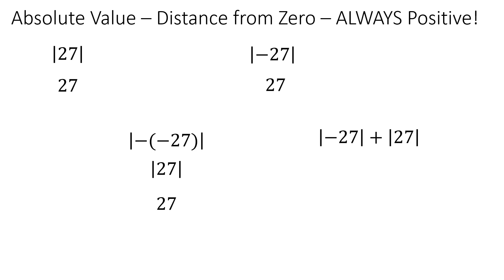This last example says the absolute value of negative 27 plus the absolute value of 27. The absolute value of negative 27 is 27, and the absolute value of 27 is also 27. So you get 27 plus 27, which is 54. That's a quick review of absolute value — remember, it is always positive.